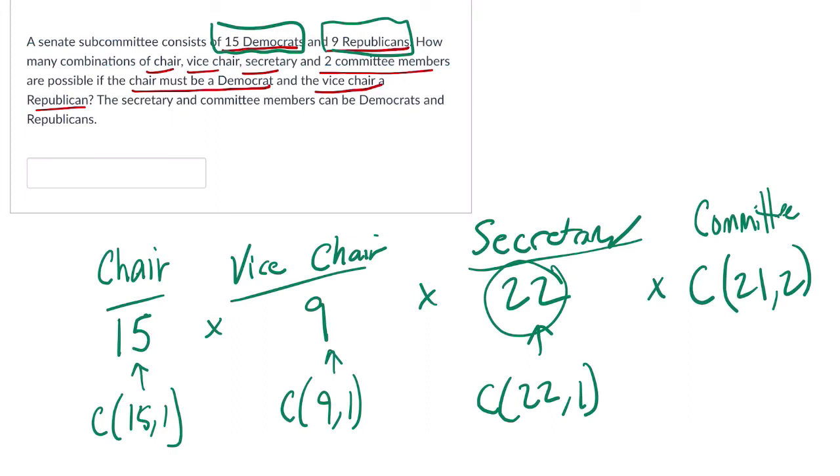So now we just want to multiply these things. That's 15 times 9 times 22, then that times 21 choose 2, which is 21 factorial over 2 and 19 factorial.